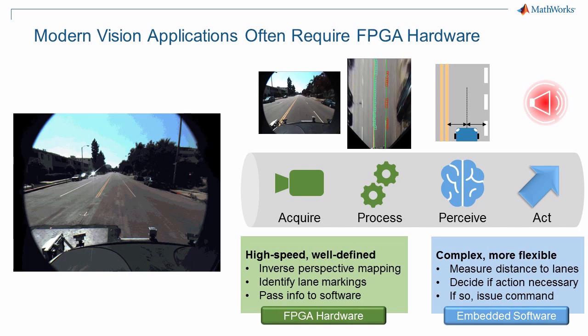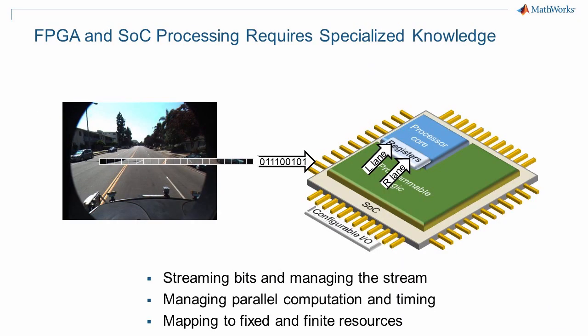FPGA hardware delivers this kind of performance with efficient power and size footprints, but programming complex algorithms in hardware description languages can be challenging. System-on-chip platforms combine FPGA hardware with a processor to run software, so high-speed and well-defined tasks can run on the hardware, delivering a smaller set of data to the software, which handles the intelligence and control.